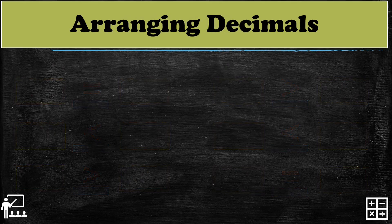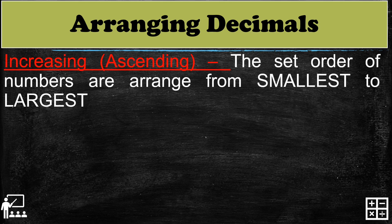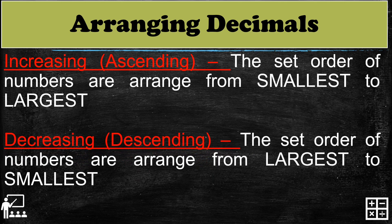Let's try arranging decimals. We arrange decimals into two orders. The increasing or ascending order is the set of numbers arranged from smallest to largest. And the decreasing or descending order is the set of numbers arranged from largest to smallest.